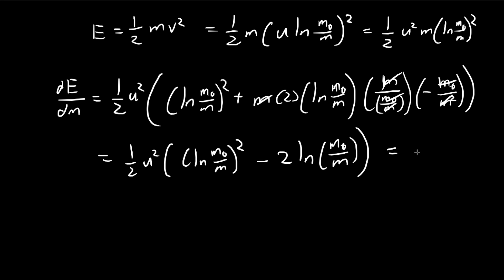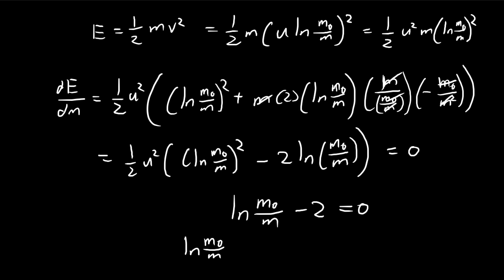Like before, we let this equal zero and divide the constants to the other side. We have two of these natural log expressions and just 1 on the other side, so dividing gives us natural log of m0 over m equals 2. This means m0 over m equals e squared. So the corresponding mass that gives us the maximum energy is equal to m0 divided by e squared.